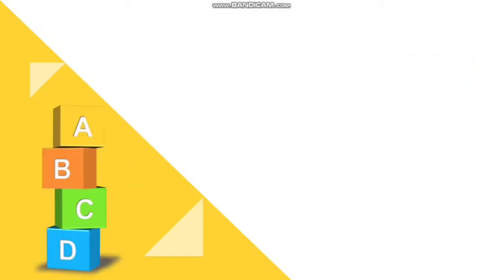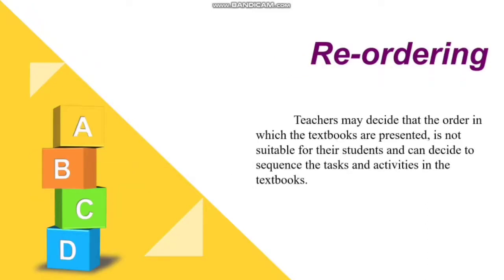Another adaptation technique is reordering. Teachers may decide that the order in which textbook tasks are presented is not suitable for their students and can sequence activities differently. This procedure refers to putting parts of a course book in a different order — adjusting the sequence within a unit or taking units in a different sequence. The language needs of students will determine the sequence in the material.